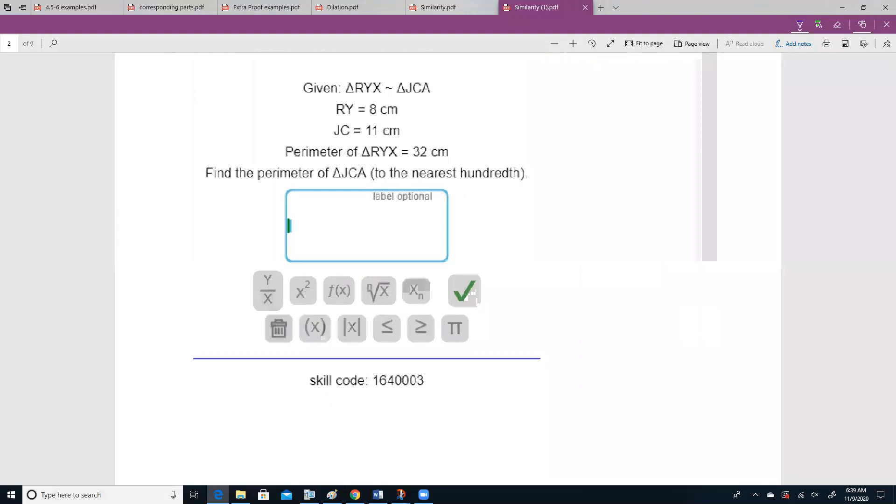All right, let's go with another one. We're given ry and cj, and we're trying to find the perimeter of jca. We see this symbol here between the two triangles. It means we know they're similar, so we can set a proportion to solve. I'm just going to go 8 over 11. Now ry is on top, and ry is part of ryx, so that needs to go on top.